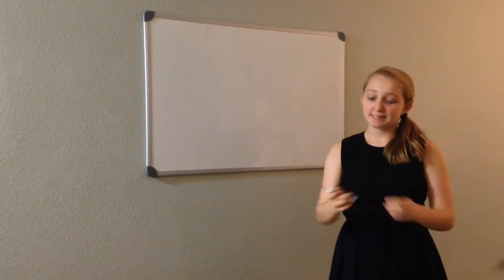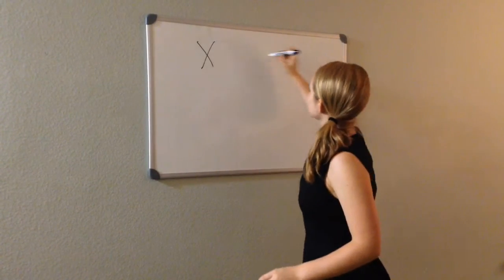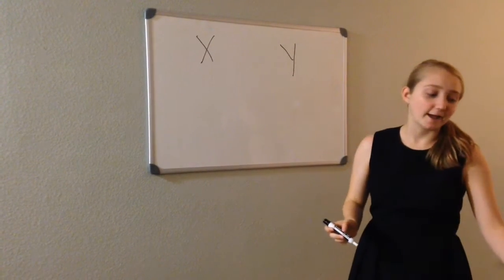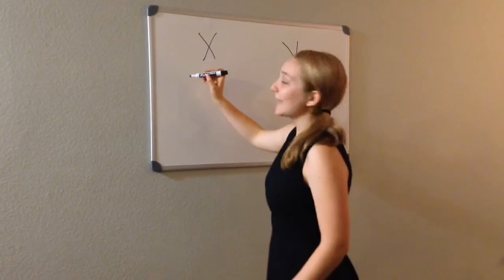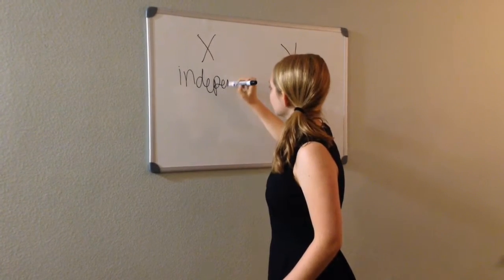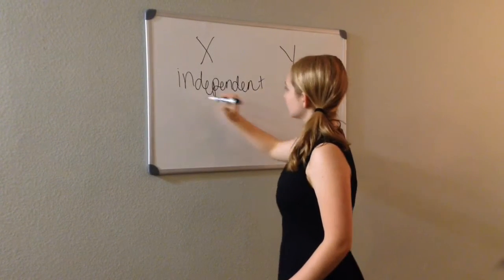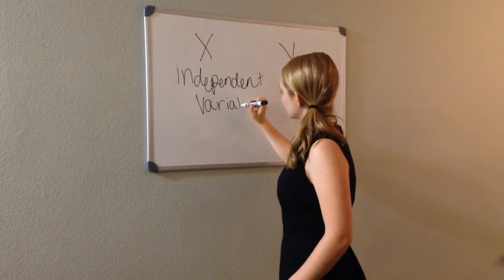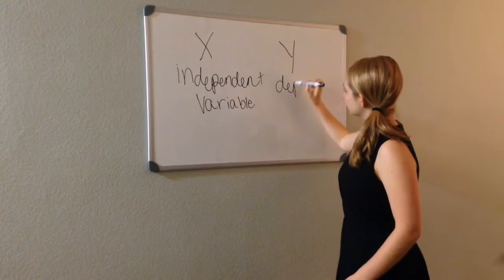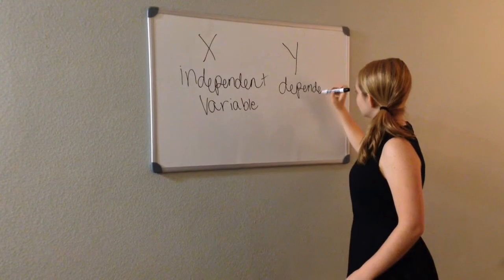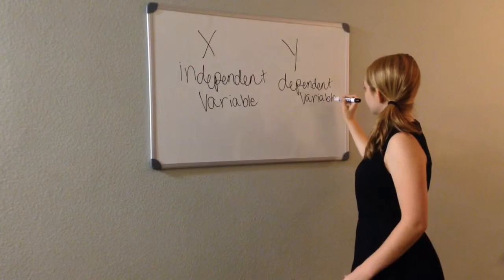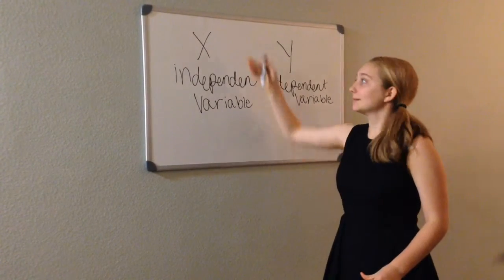In Algebra, there are two basic things everyone needs to know: X and Y. But nothing is ever this easy. There are a lot of different names for X and Y. The first one you need to know is X can also be called the independent variable, while Y is called the dependent variable.